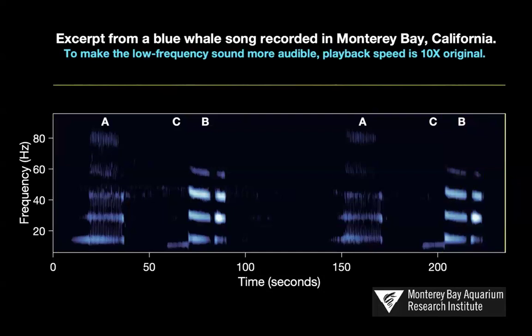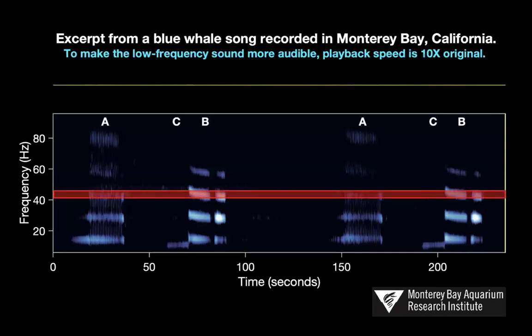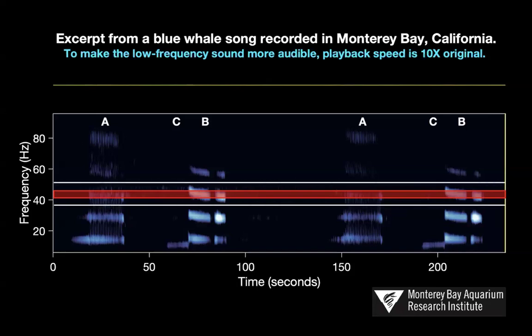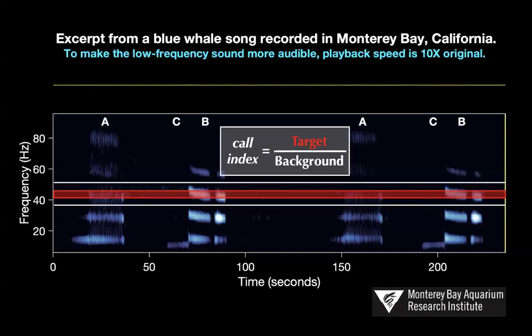These three units — the A call, the B call, and the C call — are repeated for many hours at a time as blue whales produce these really low-frequency songs. The B call is by far the most common unit and also the highest amplitude signal. Because of this and its very stereotyped nature, we can use a simple energy detection metric to quantify the amount of blue whale song in the Monterey Bay soundscape at any time, by measuring amplitude in the narrow frequency band of the third harmonic of the B call and comparing it to nearby background frequencies.